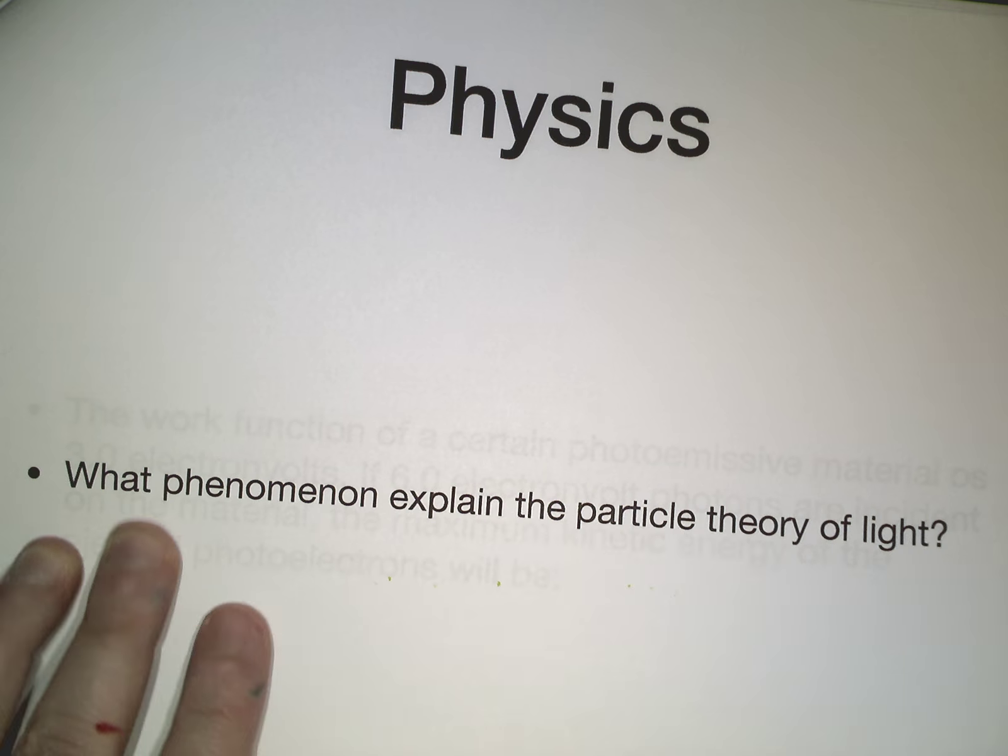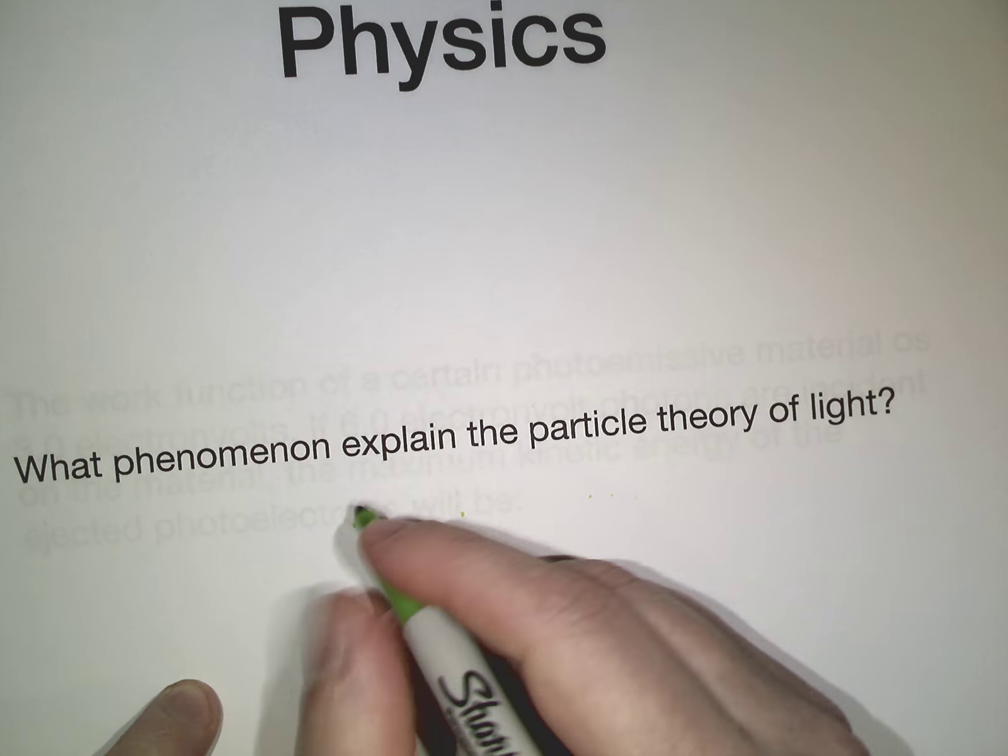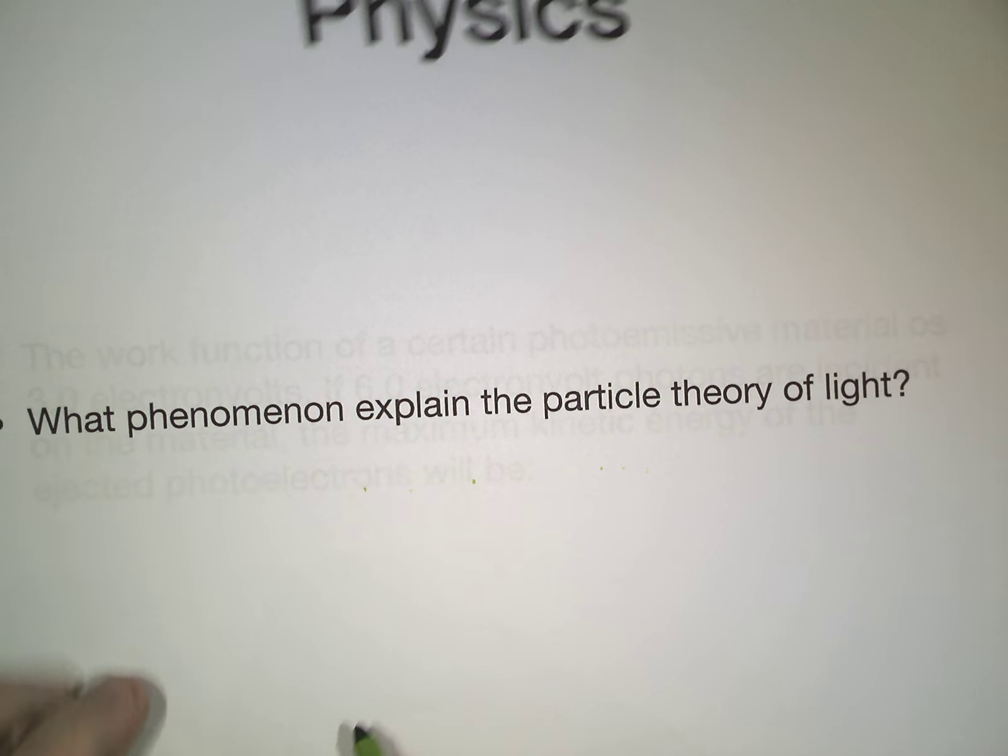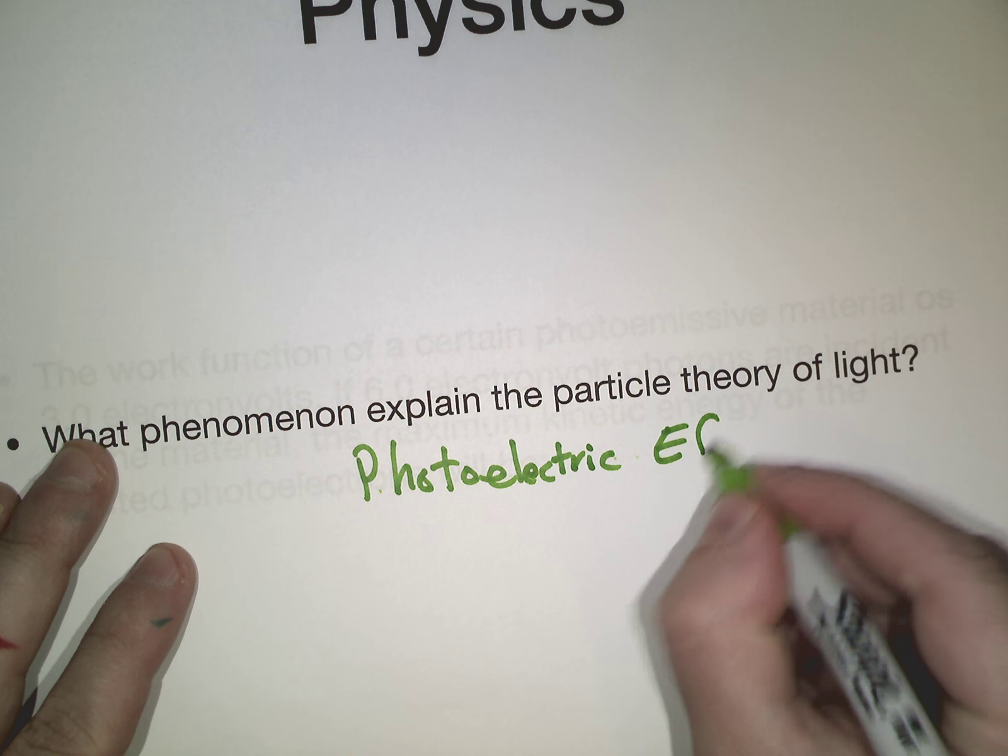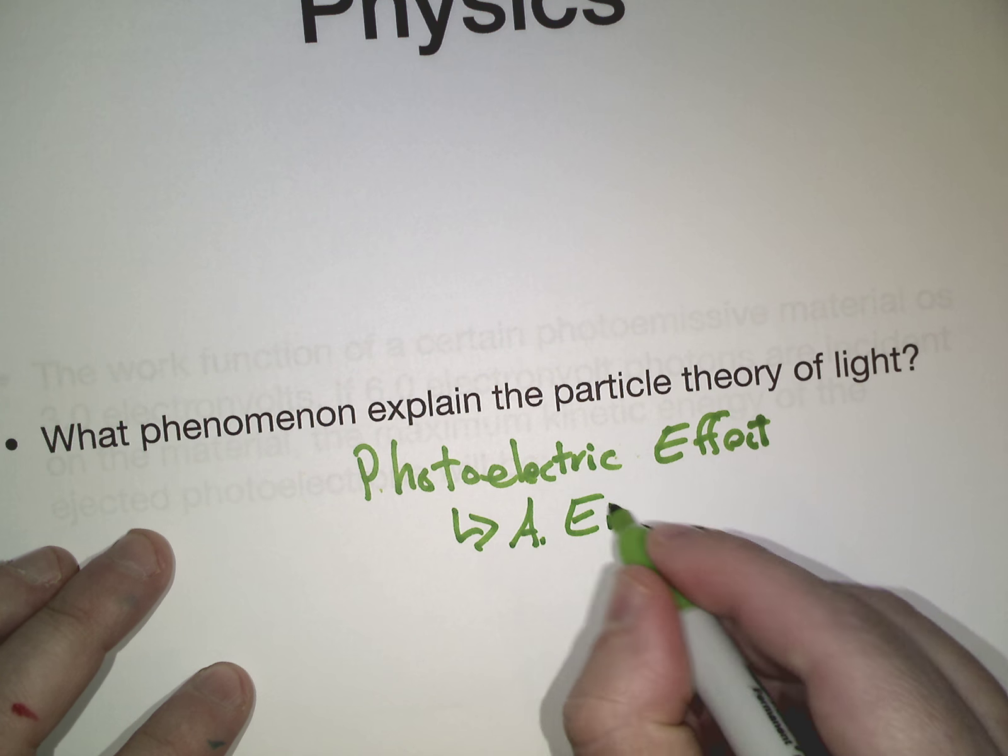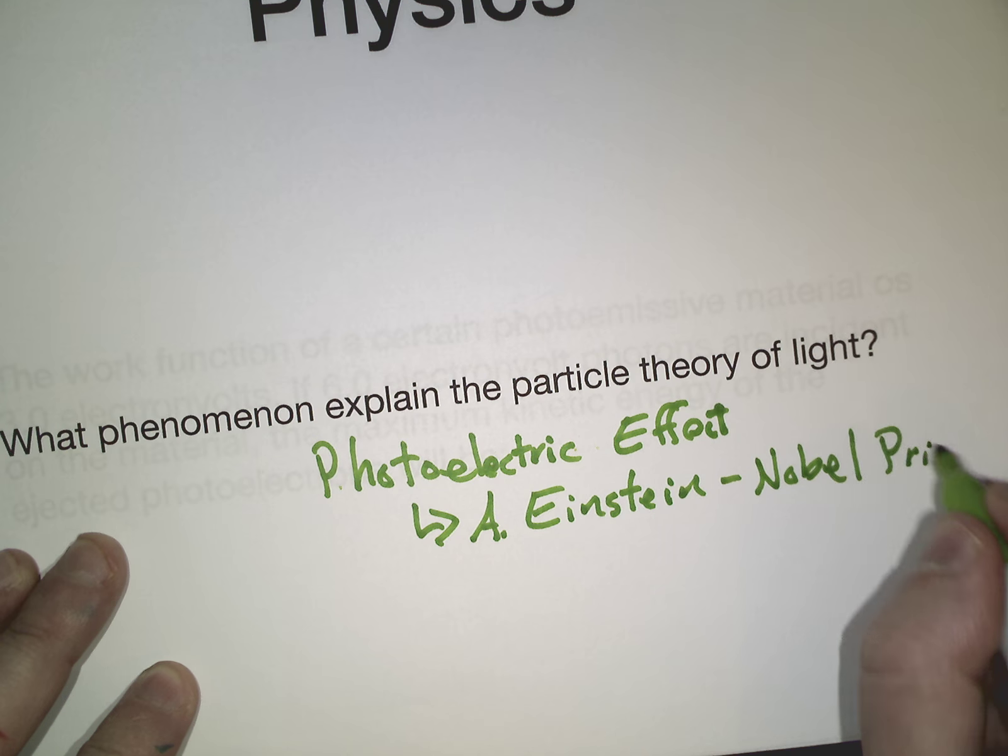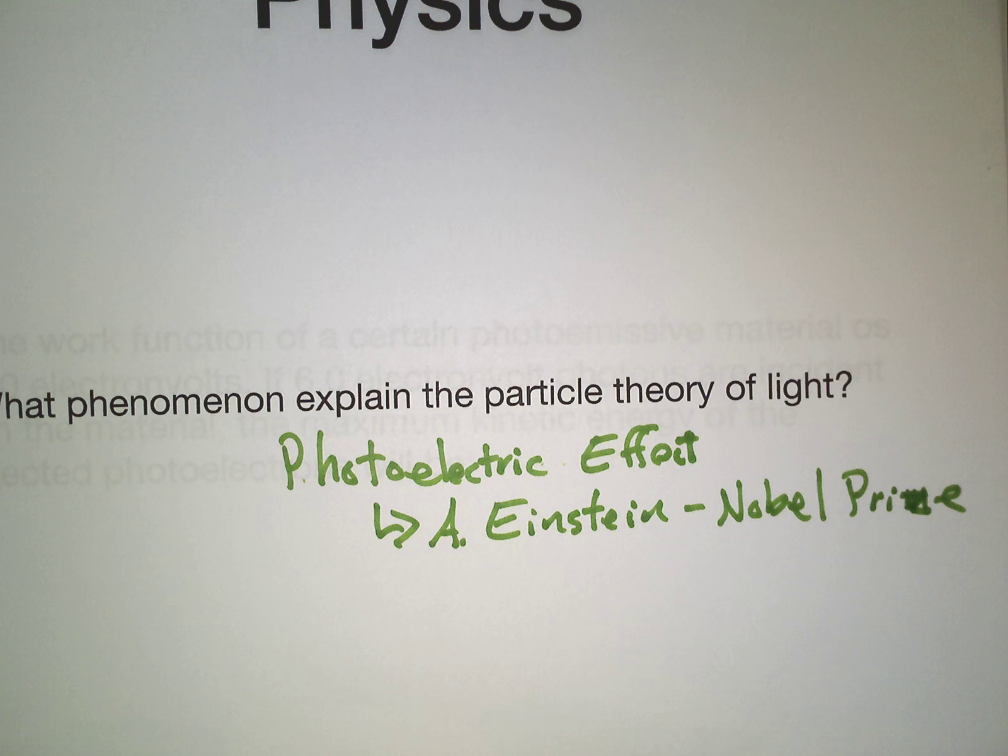Now, the last one we're going to do for today, nice quick lesson, is what phenomenon explains the particle theory of light? That's going to be a multiple choice question. But the correct answer is the, it always escapes my mind what it's called, it's called, because it's a big word, photoelectric effect. And I should know this off the top of my head, because this is what, how Albert Einstein won his Nobel Prize. Not for general or special relativity, he won for the photoelectric effect. Which is more of a quantum physics thing, considering he's considered one of the founding fathers of basically modern cosmology.